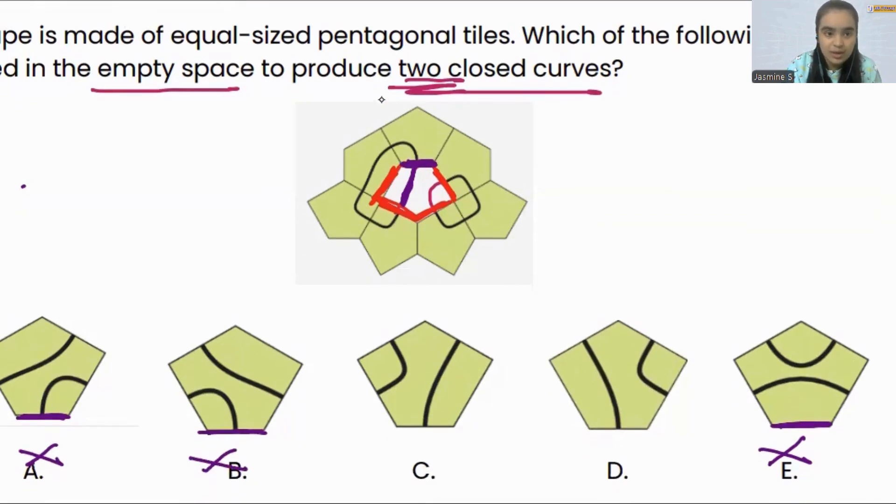Why? Because there is no line which is passing from the base. Now we are left with C and D from where the line is actually passing from the base. But now we just have to figure out this part.